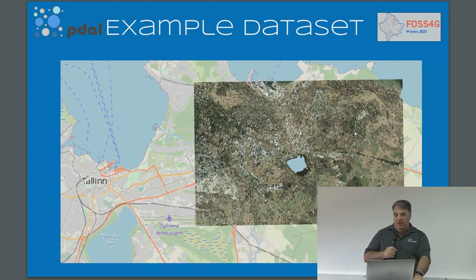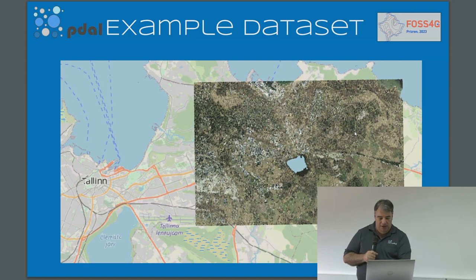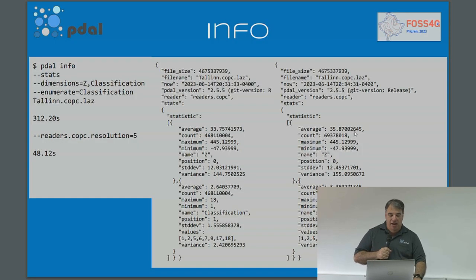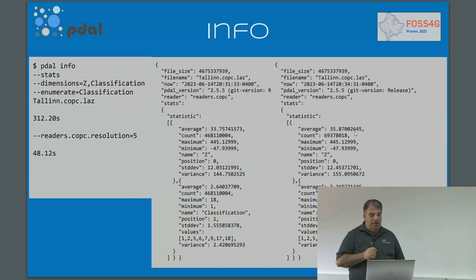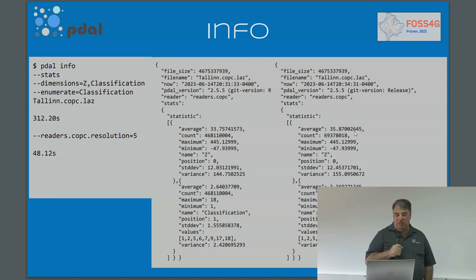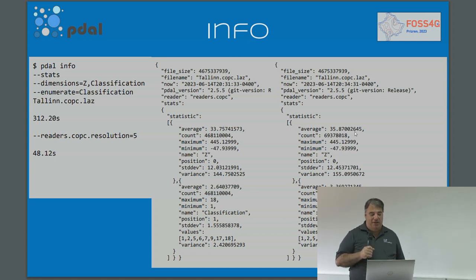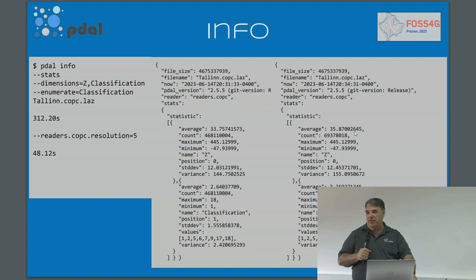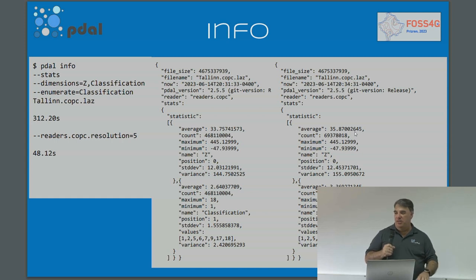Here's an example dataset over Estonia rendered in QGIS. Running `pdal info` reads through all the data — it took 312 seconds to read this data because it's 468 million points; it's a big file. But because it's a COPC file, we can set the resolution to five meters and just read a subset of the data. Now it only took 48 seconds to read it. This is the capability that allows QGIS to render point cloud data in a fairly seamless fashion — it only has to read as much data as it needs for the visualization.